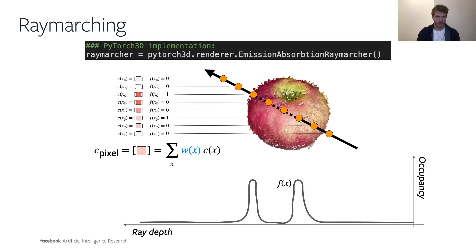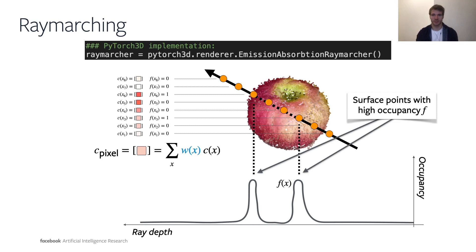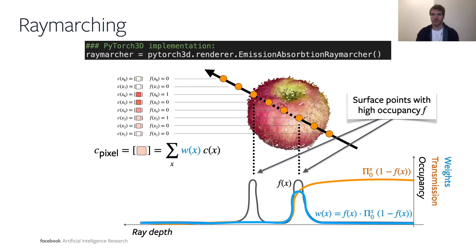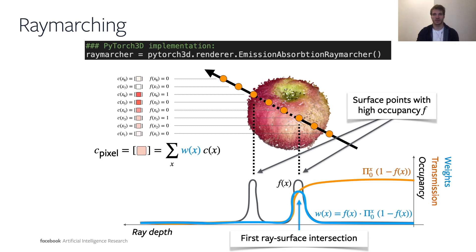We illustrate how the interval depths are generated on the following plot. We can first plot the occupancy function along the ray — since the ray intersects the apple in two different places, the occupancy function has two peaks. We then plot the transmission function, which expresses the probability that a ray does not terminate at a given point X, corresponding to a cumulative product of the complement of the occupancy probabilities. The product of the transmission and occupancy functions gives us the weighting function used to render actual colors, which peaks around the first intersection of the ray with the surface — meaning it accumulates only the colors covering the actual surface we want to render.